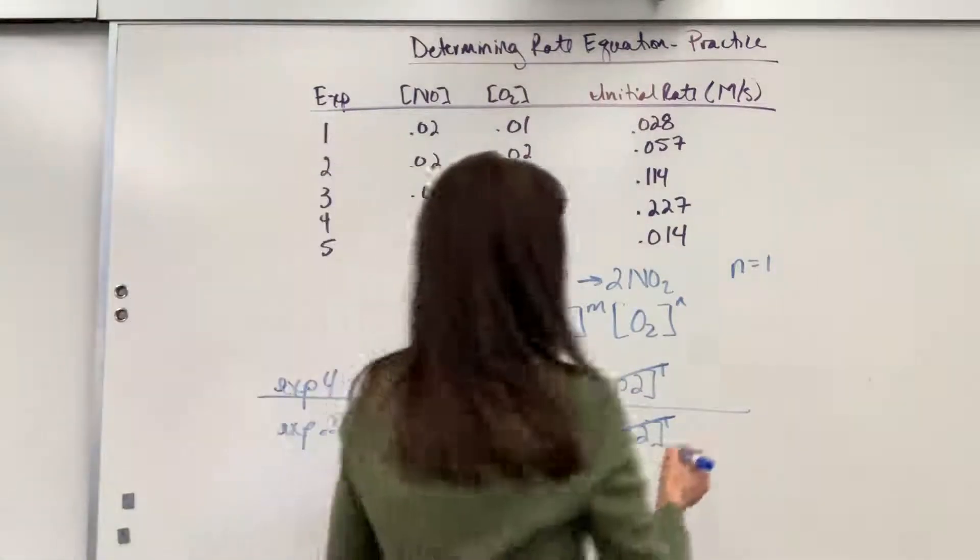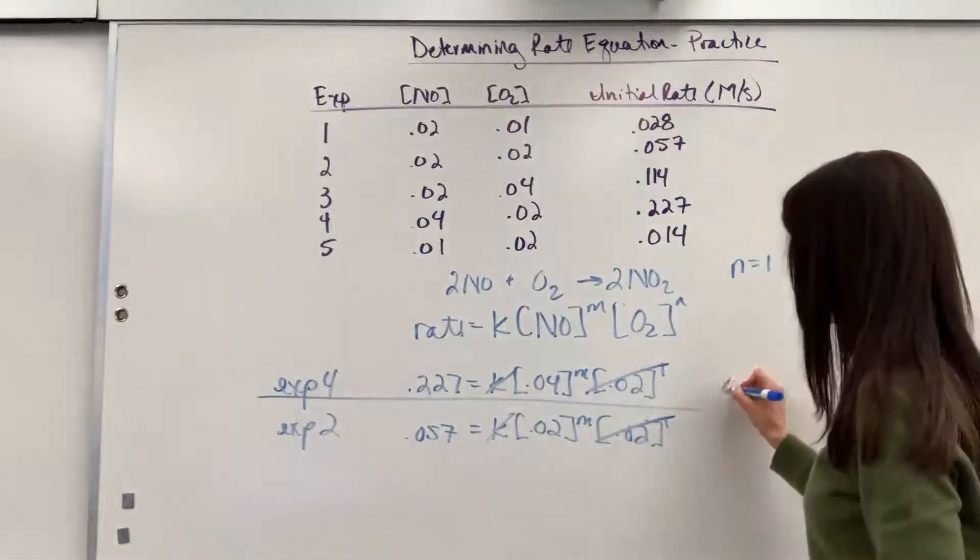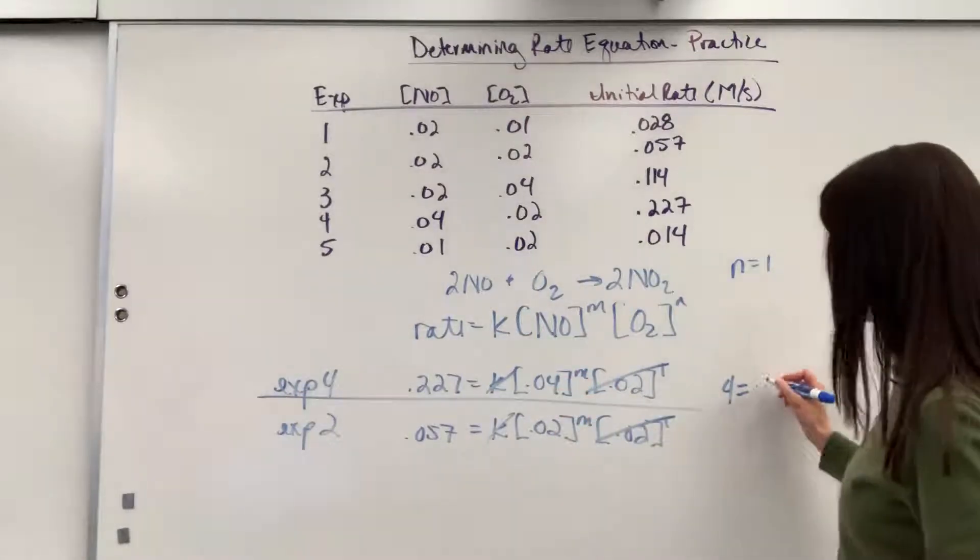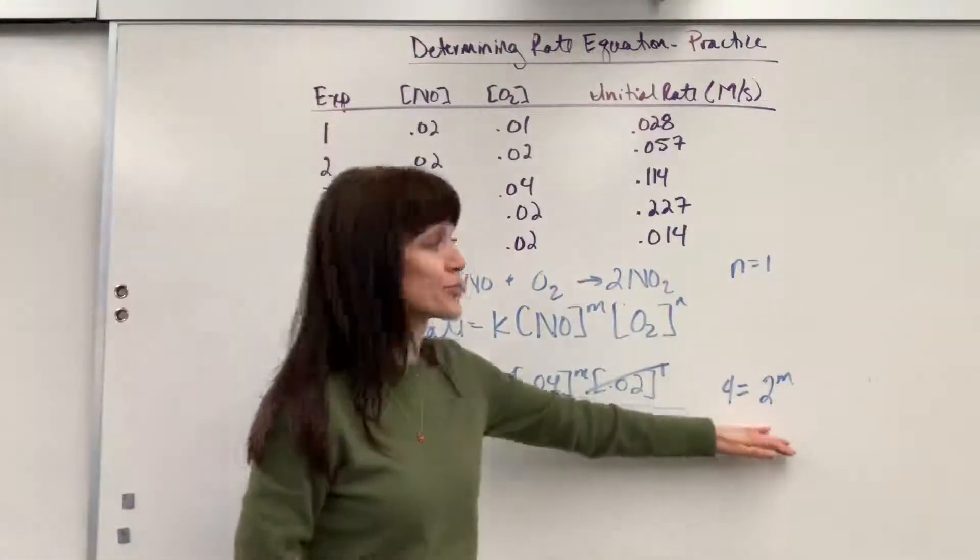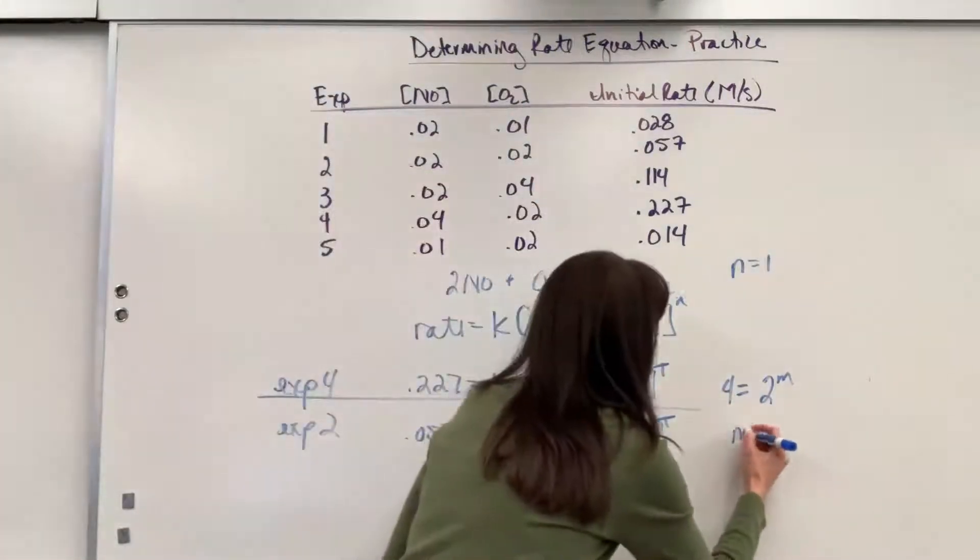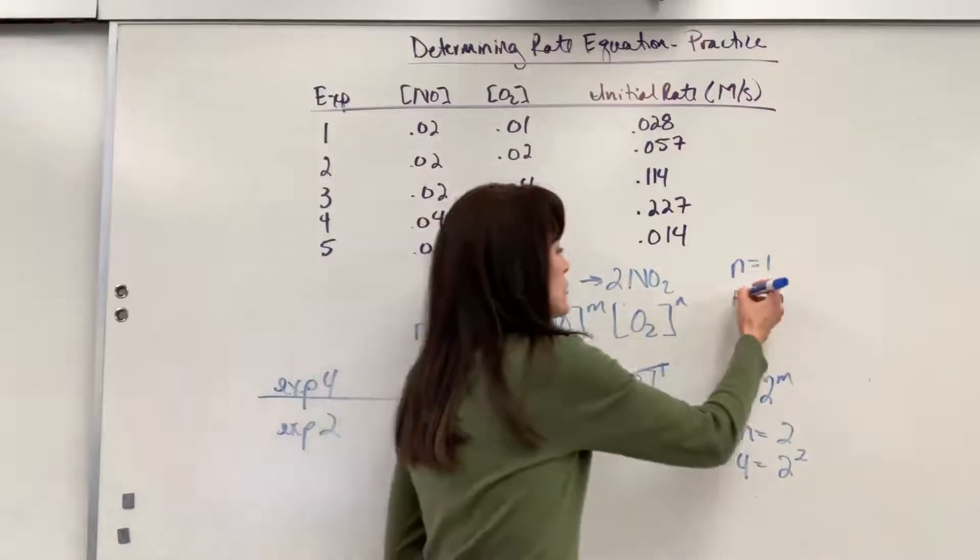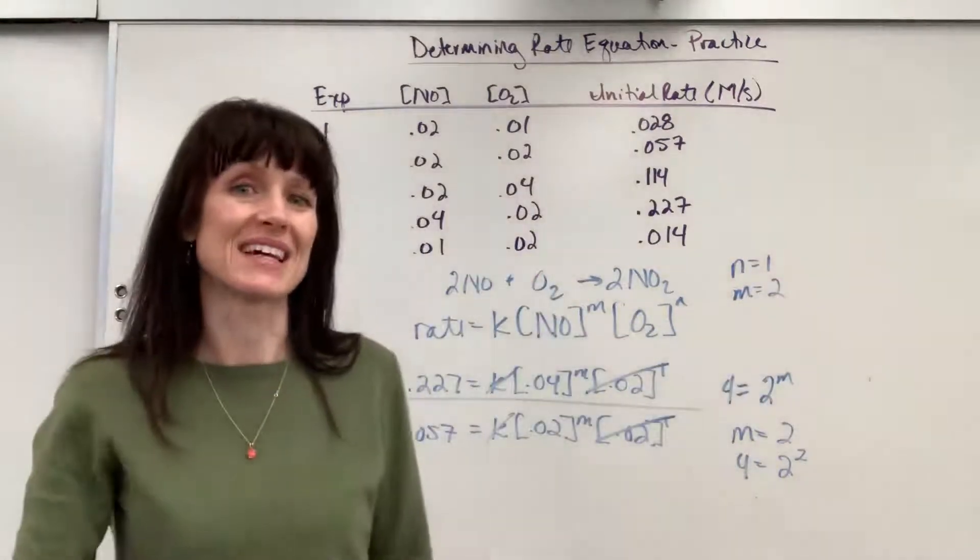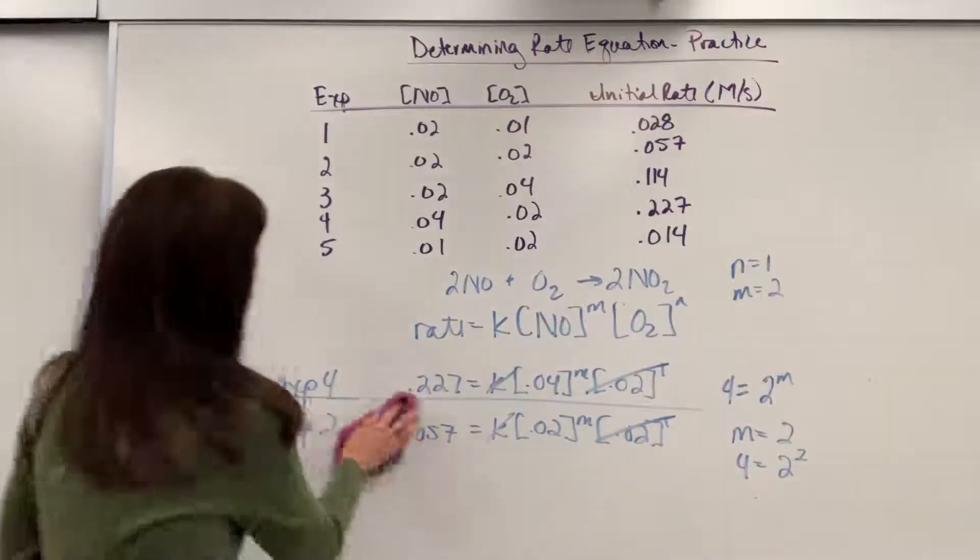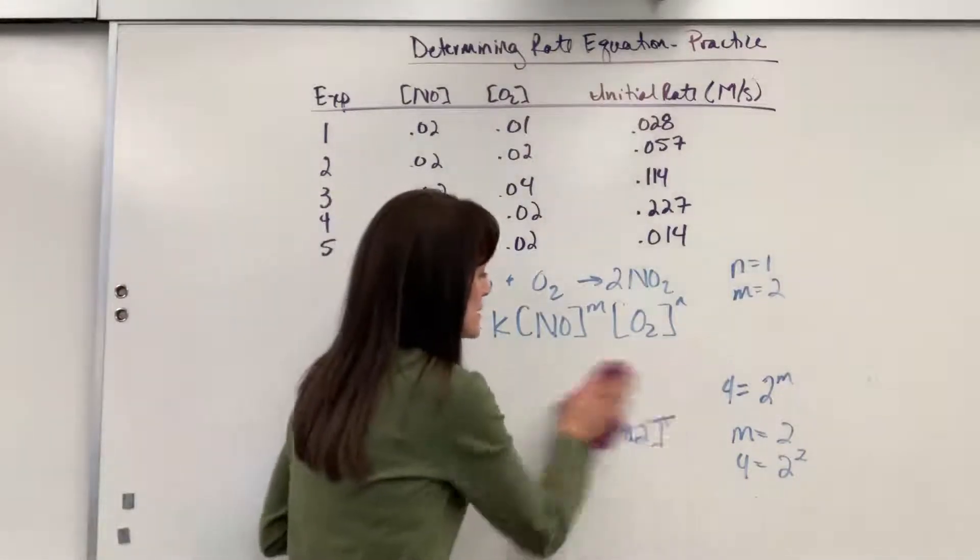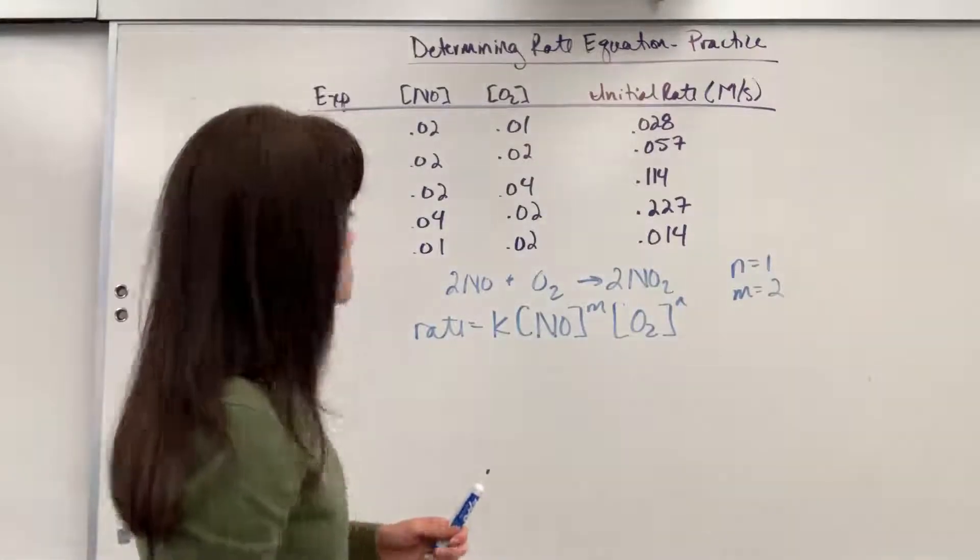So now we can just do a little bit of math. We're going to have 0.227 divided by 0.057. It's really close to 4 equals the 0.04 divided by 0.02 is going to be 2 to the M. So what does M have to be for that to be a true mathematical statement? M must be a 2. 4 equals 2 squared. I'm just going to make a note. M is second order. Now I want to come back and show you this. I'm looking at it by inspection. That you could just look at this and figure out the M is 2 and the N is 1.